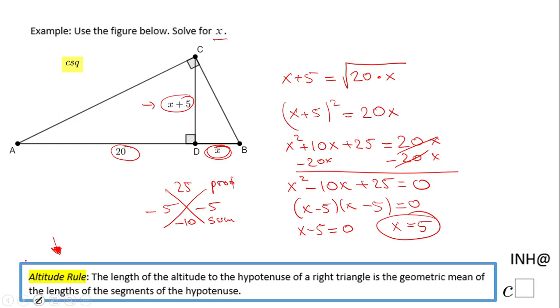And that means CD will be, if you need that, 5 plus 5, that will be 10. This will be 10 and DB will be 5 in case you need these two measures.